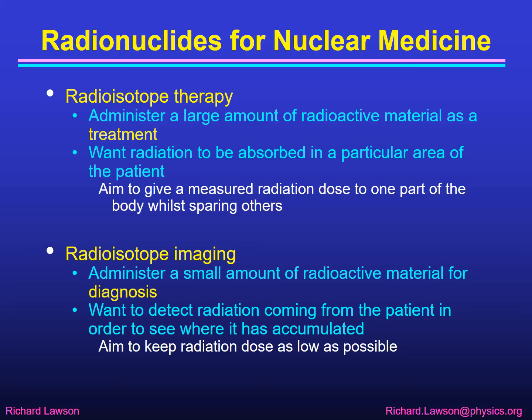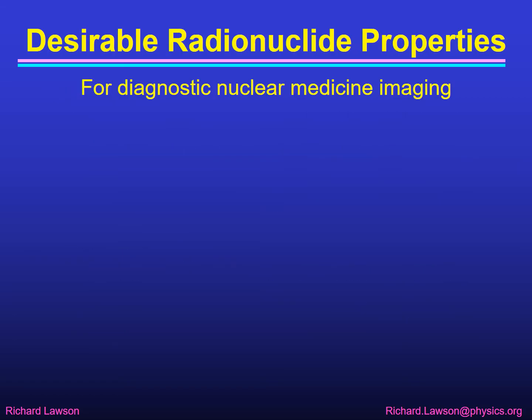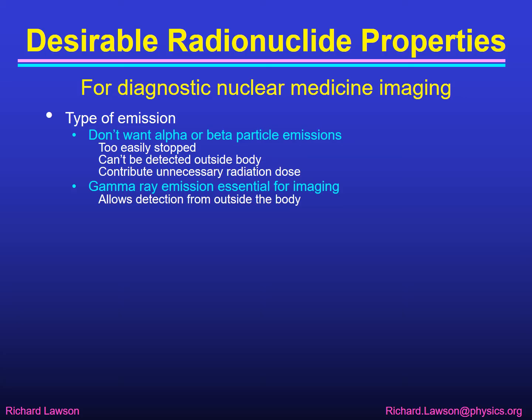So we have two different applications with different aims. I'm going to talk about the desirable radionuclide properties for diagnostic nuclear medicine imaging since that's the vast majority of nuclear medicine studies. The type of emission is important. We obviously don't want alpha or beta particle emissions because they're too easily stopped in the body. Their range is very short so they won't get out of the patient; we can't detect them outside the body, so the radiation will be absorbed in the patient and give them an unnecessary radiation dose without contributing anything to an image. So gamma ray emission is essential for imaging purposes, as that will allow us to detect the radiation from outside the patient's body.